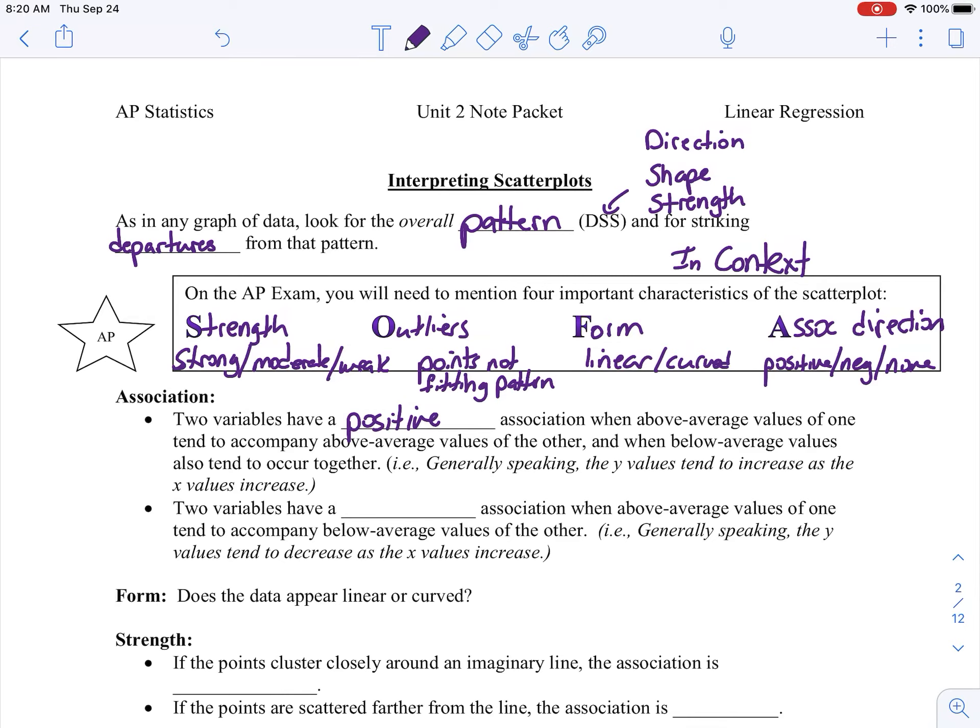Both variables are going to increase. The more gas I put in my tank, the more that's charged my credit card. Negative is going to be when one increases while the other one decreases. So the more people that go in on the pizza, the less I have to pay individually. That would be something that is a negative association. As one variable increases, the other one decreases.